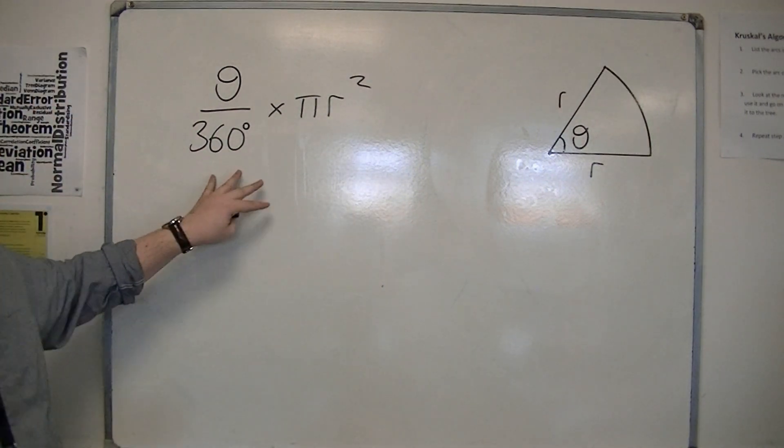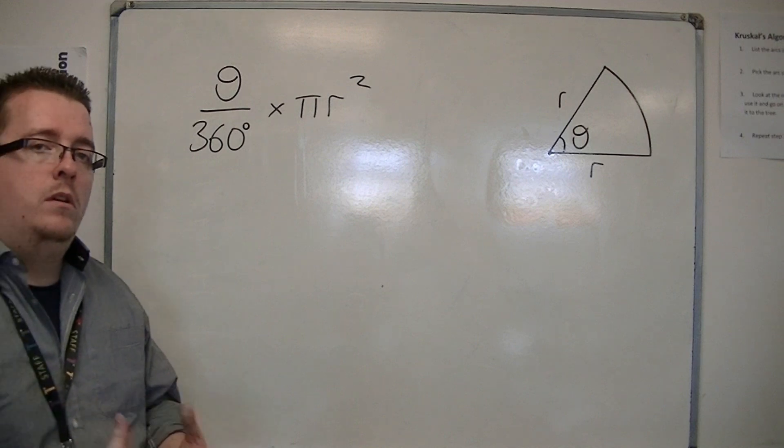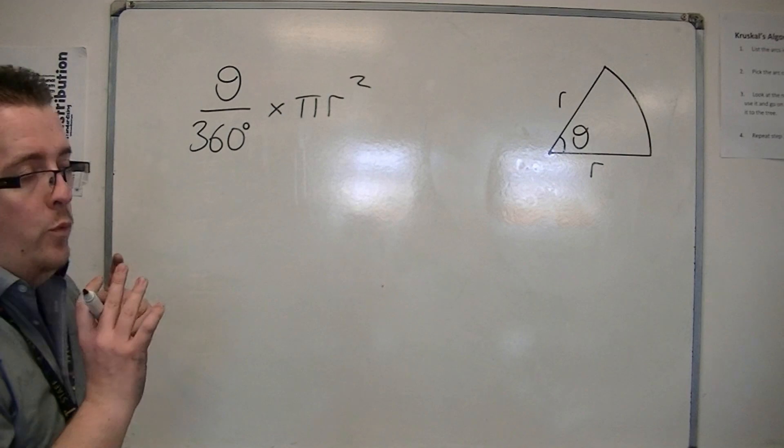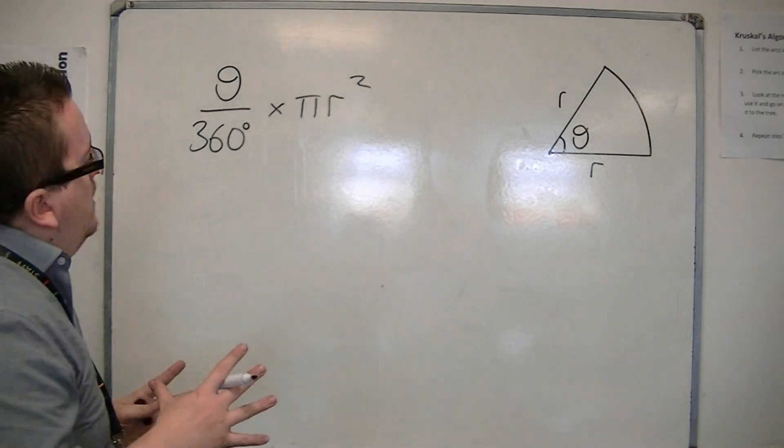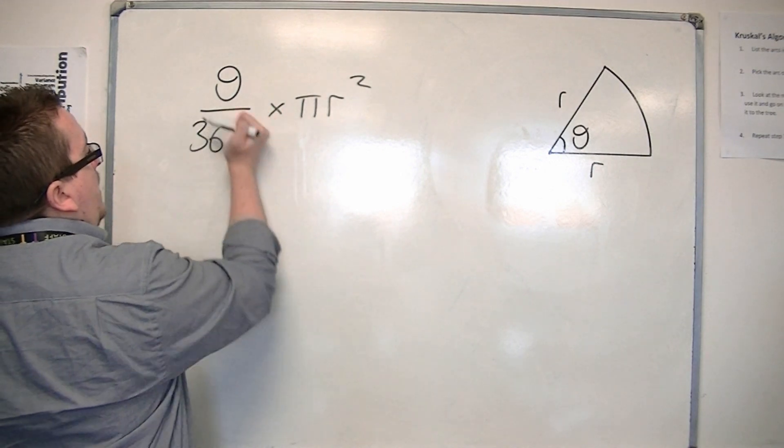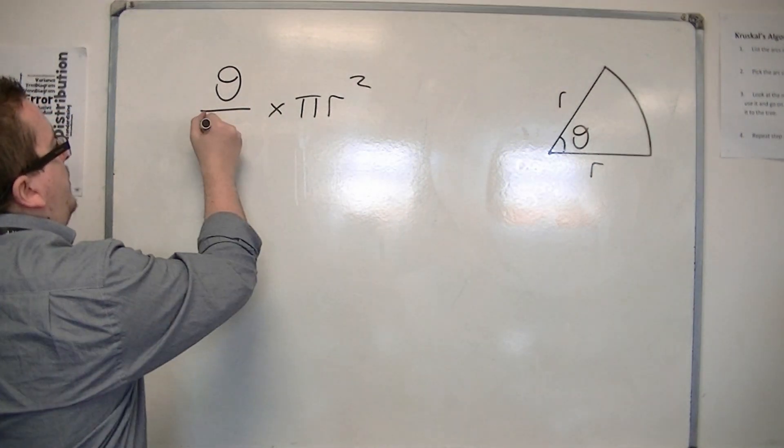So that, in degrees, would work out the area of that sector. But if we're not in degrees, and we're in radians, if we replace the 360 degrees with 2 pi,